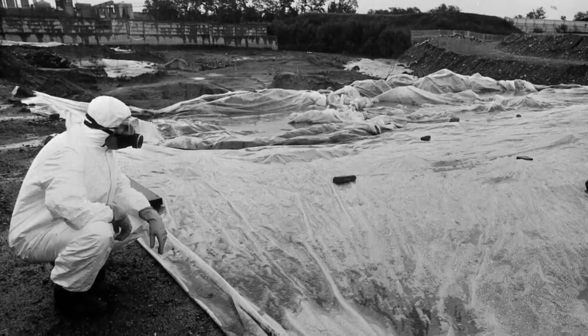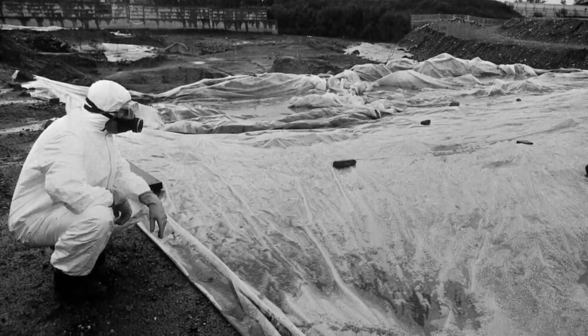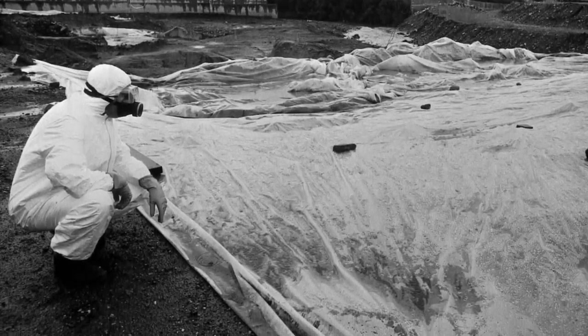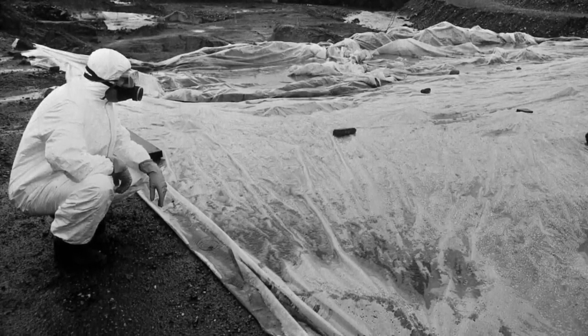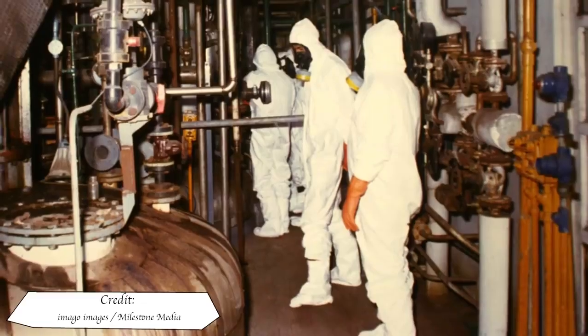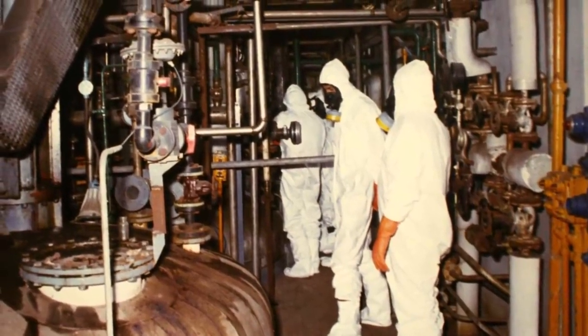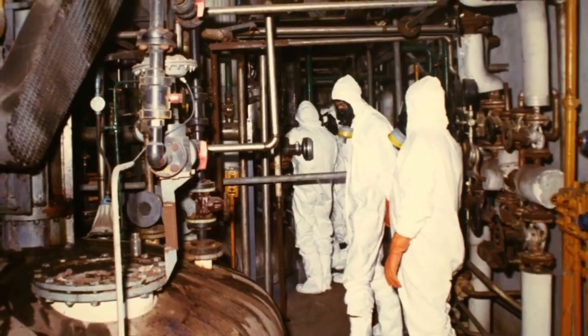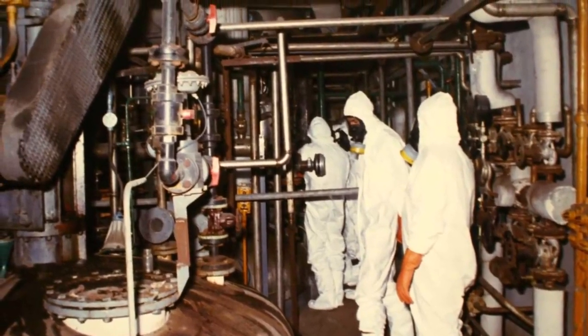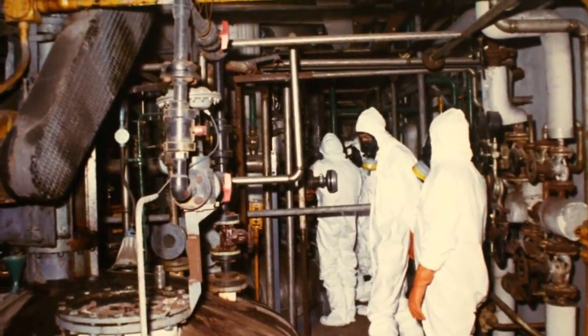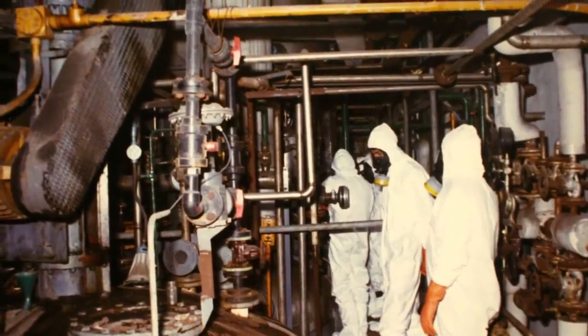The ICMESA plant was demolished in 1982 and waste materials were put in barrels designed for radioactive waste for incineration in Switzerland. Anything of value was removed for decontamination and later reuse. All remaining waste was buried in a container on site.